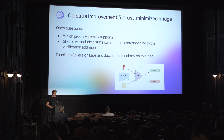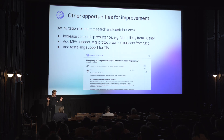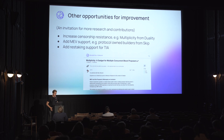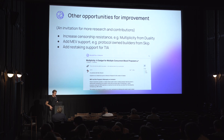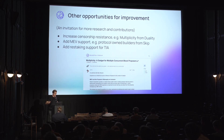A few other ideas for improving Celestia going forward: we want to increase censorship resistance — ideas like multiplicity from Duality come to mind, since the data availability layer should be as censorship resistant as possible. Adding in-protocol MEV support and building from Skip is also a really interesting idea. Adding restaking support for Celestia would be really cool — we could launch shared sequencer networks partially secured by the Celestia token. And there's another ZK idea: the Quantum Gravity Bridge, generating a ZK version of that so it's very easy to verify.